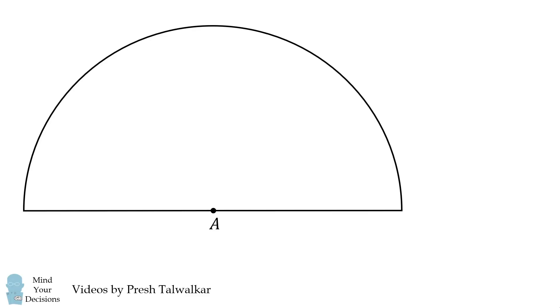Mind your decisions, I'm Presh Talwalkar. In semicircle A, construct semicircles B and C along the diameter of semicircle A.